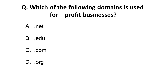Let me explain all these domains. .net is for networking — within an organization or a large government institute. .edu is for educational institutions or organizations. .com is for commercial purposes, meaning it is for profit businesses — so the correct answer is .com. .org is for organizations. Remember all four domain names, their full forms, and their specific uses, as this question is asked very often.